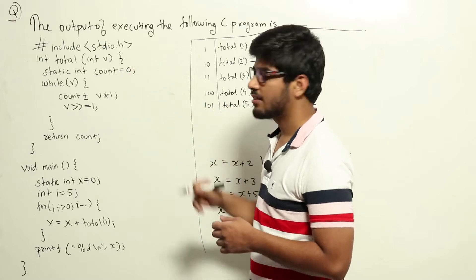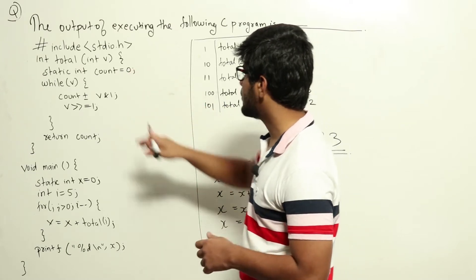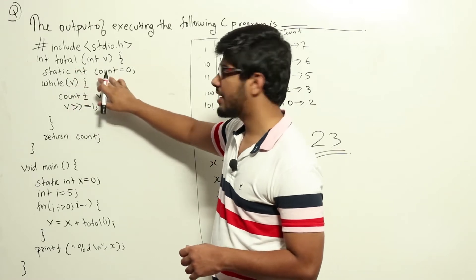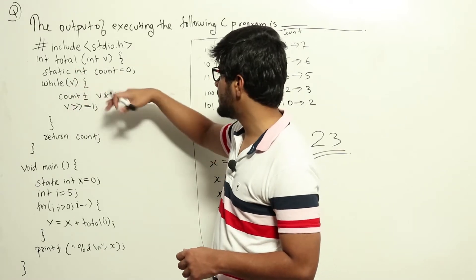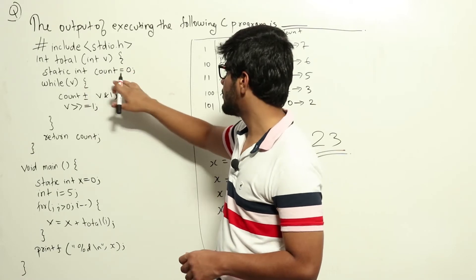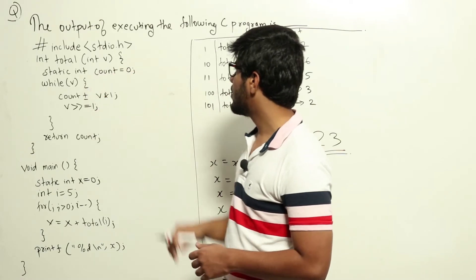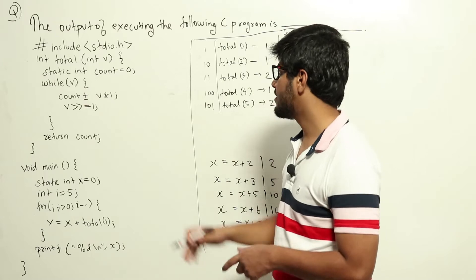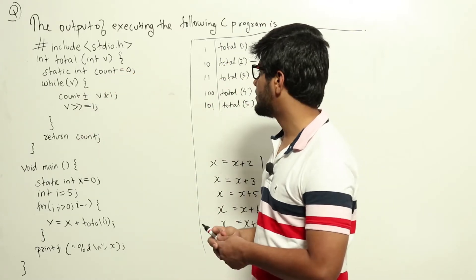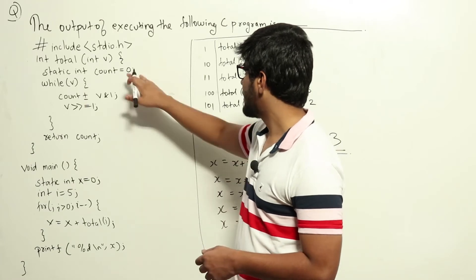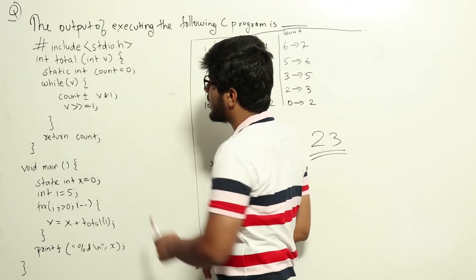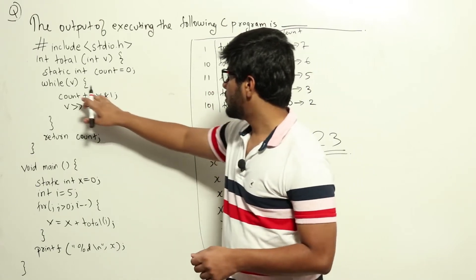Now let's look at the function total. There is a static int count defined as zero. Since it is a static int, there will only be one instance of this variable throughout all function calls — each call does not get a fresh copy. There will be a single instance of count throughout the program, and whenever count is changed, that value persists.